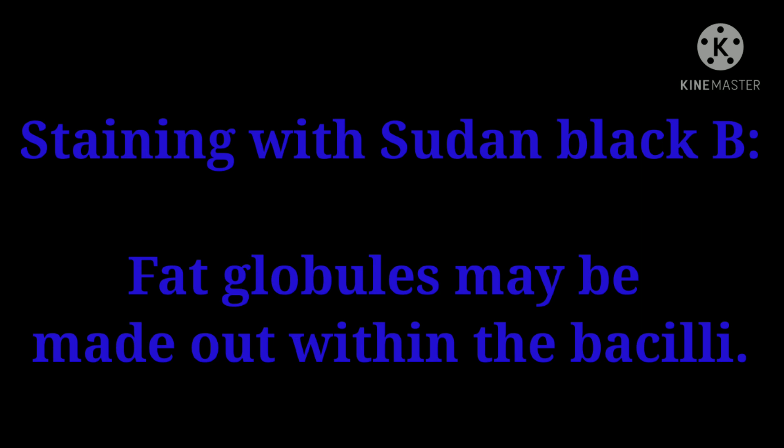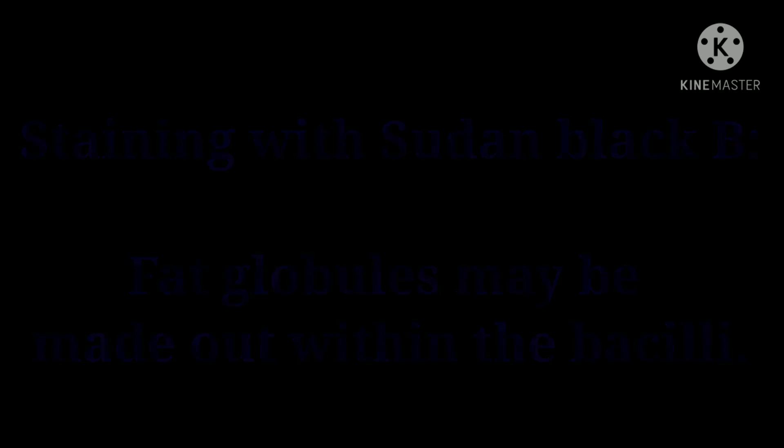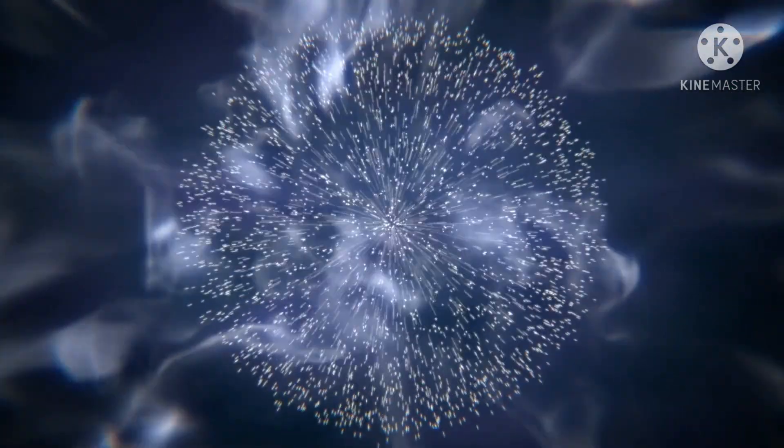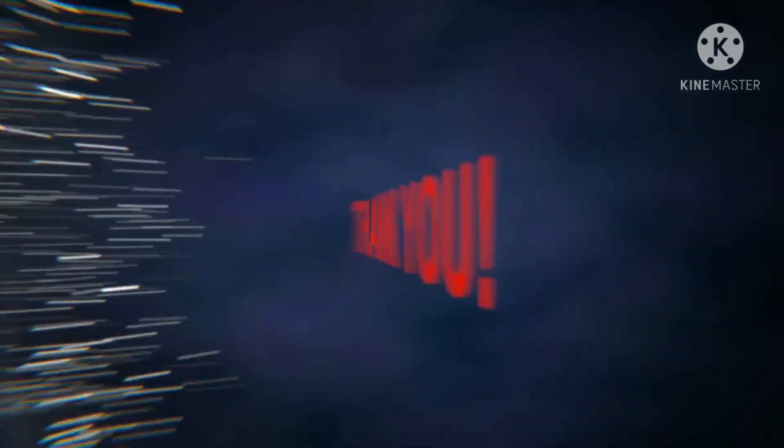Staining with Sudan black B: fat globules may be made out within the bacilli. Friends, I'm concluding this video here. See you soon in my next video. Thank you, friends.